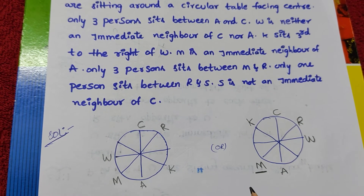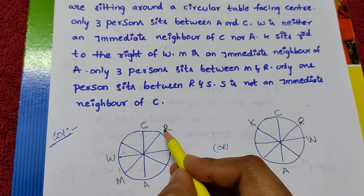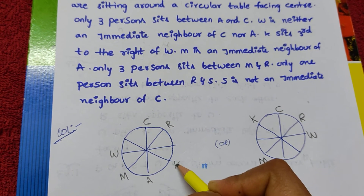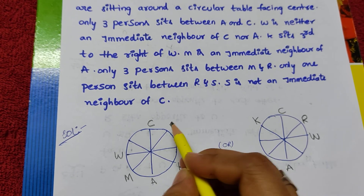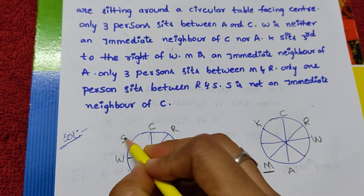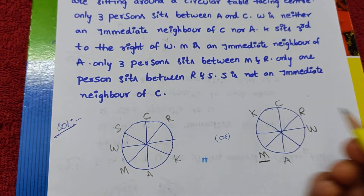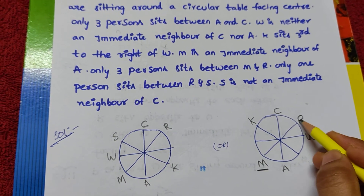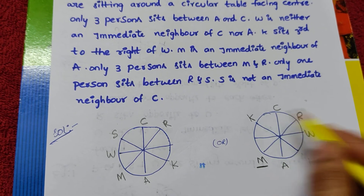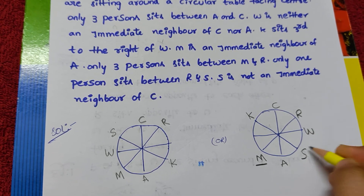Only 1 person sits between R and S. You already know R's position in this diagram. Can we place S next to a particular spot? No — because K is there. Checking the other side: one person sits between R and S. Yes, we can place S here with one person in between.